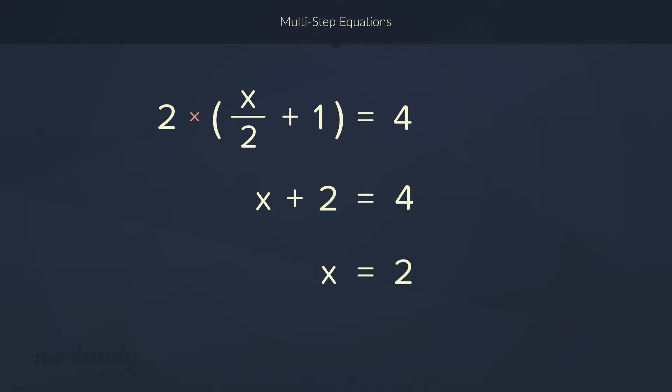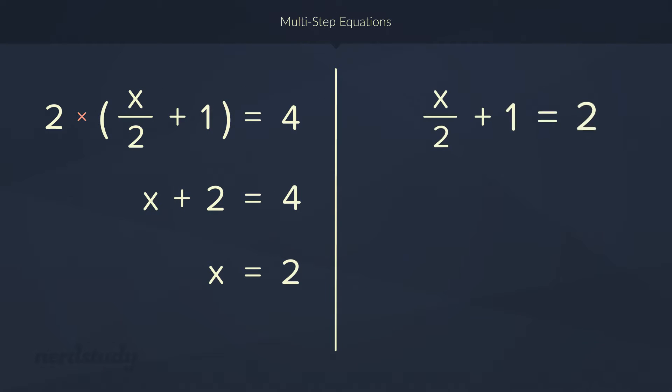Hmm, the only interesting thing here is that we did not do reverse BEDMAS order, and we still arrived upon the correct answer. We dealt with the division before dealing with the addition. So, should we use the reverse BEDMAS order or not when trying to isolate our variable? Well, firstly, let's try the same question by solving it one step at a time in reverse BEDMAS order as we were taught to do so in the beginning of the video. Instead of multiplying by 2 to take care of the division of 2 first, we should be subtracting both sides by 1. We're left with x over 2 equals 1. And now, we would multiply by 2 and get x equals 2.